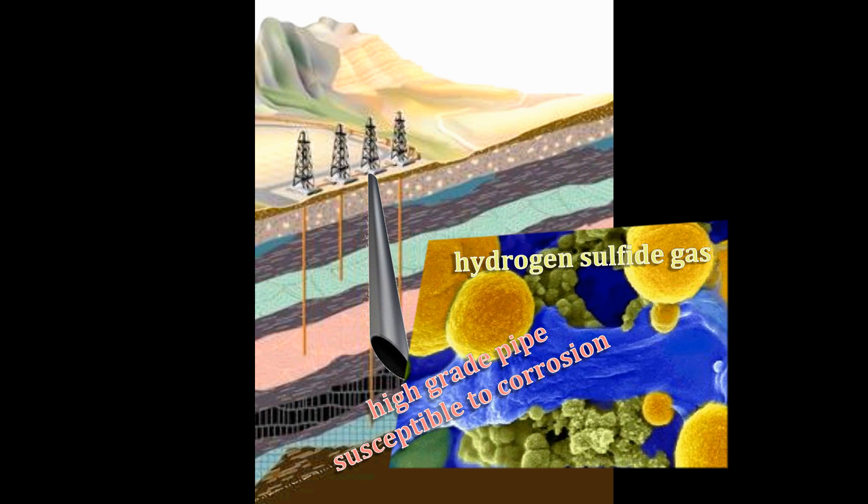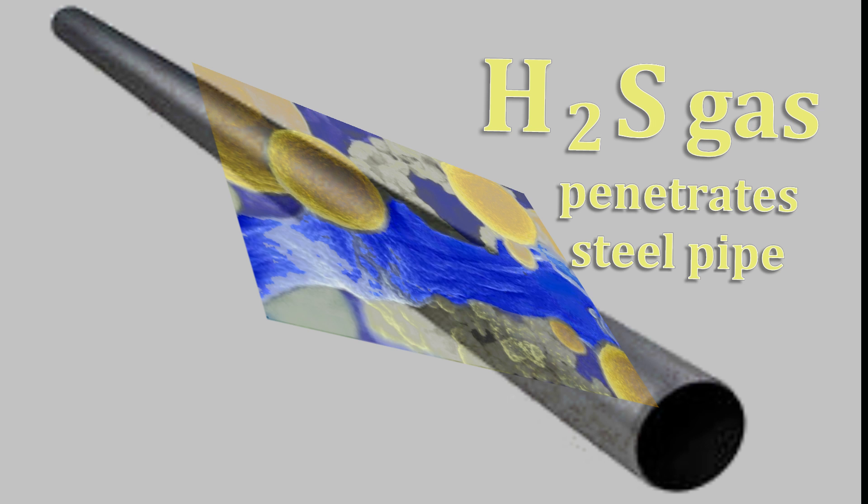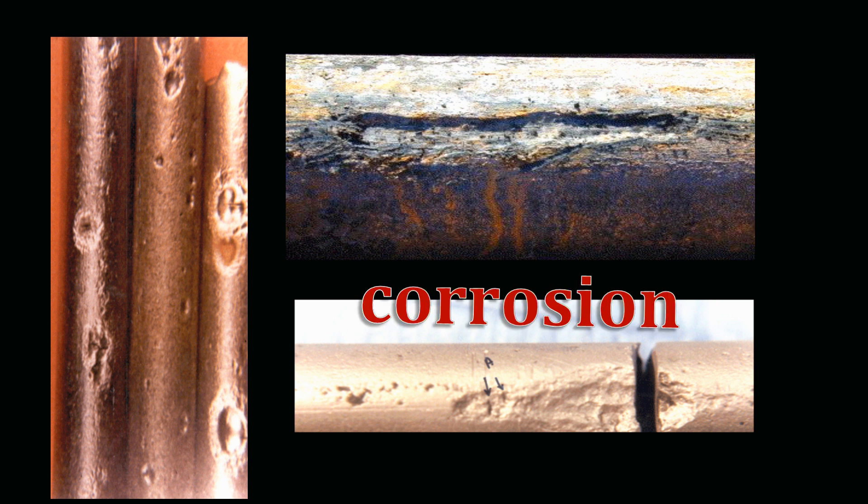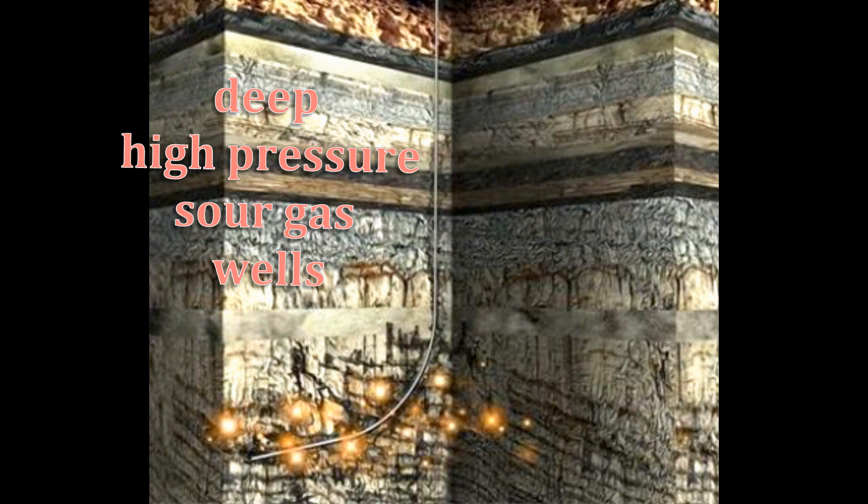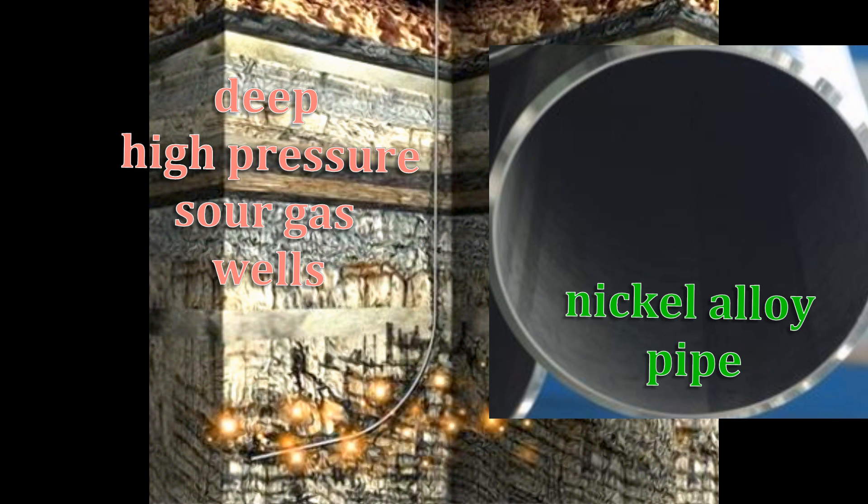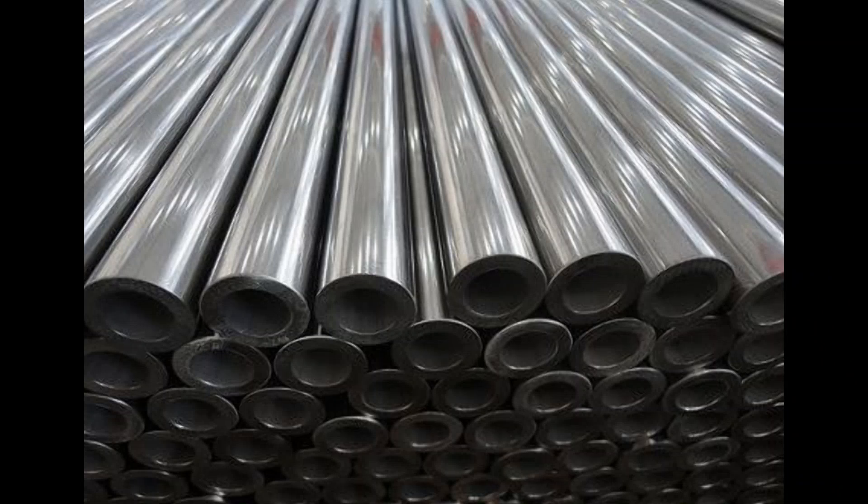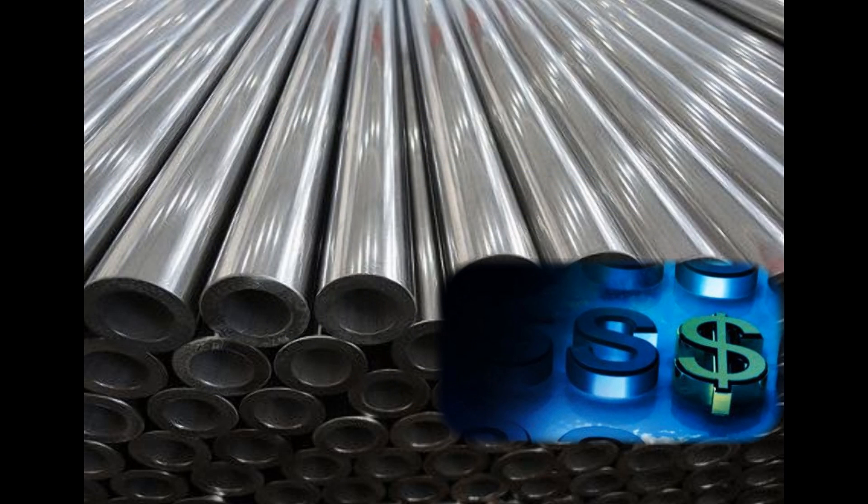For example, the presence of hydrogen sulfide gas is particularly troublesome because H2S can penetrate high strength steel to become brittle and lead to cracks and breaks. In very deep, high pressure, sour gas wells, nickel alloy pipe is often the only solution. Because it is very expensive, it is used only when nothing else will do the job.